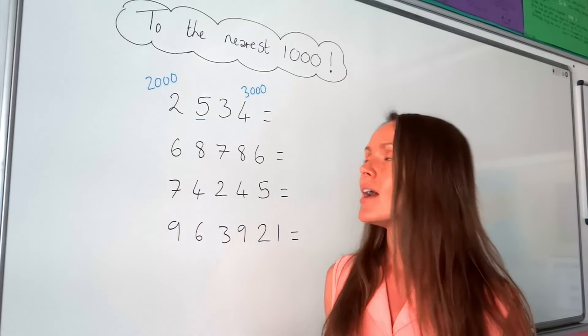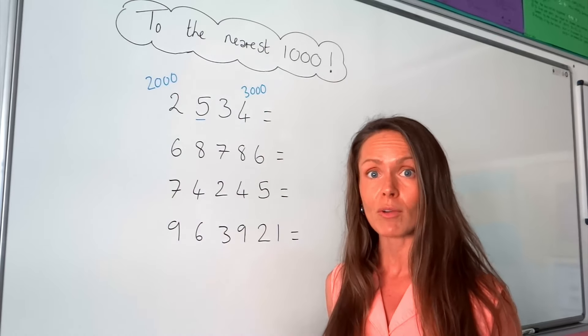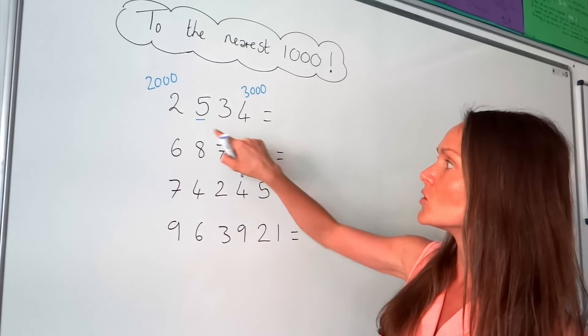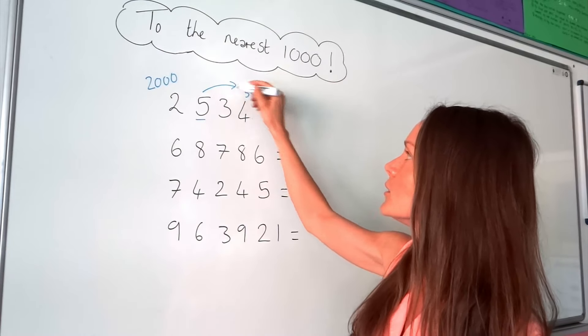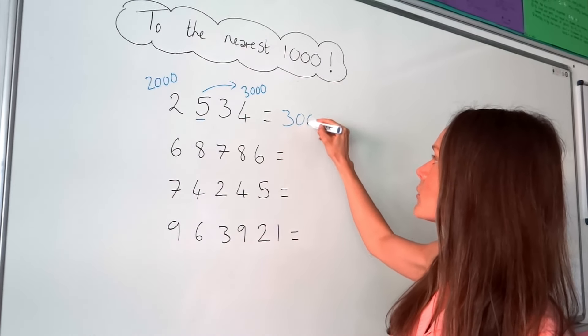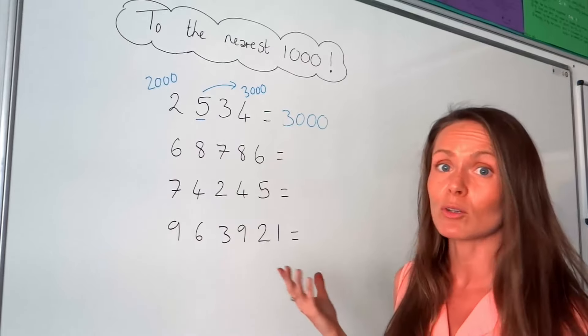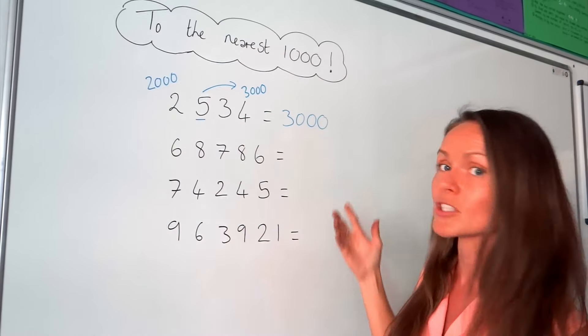And if you see a number that's smaller than 5, then you don't round up. So in this one, because we have the number 5, that means we round up. So in the first one, the nearest 1,000 is 3,000. But maybe you already spotted that at the beginning, which is great.